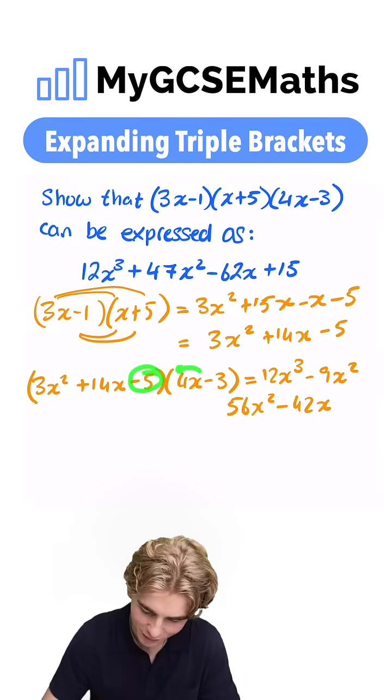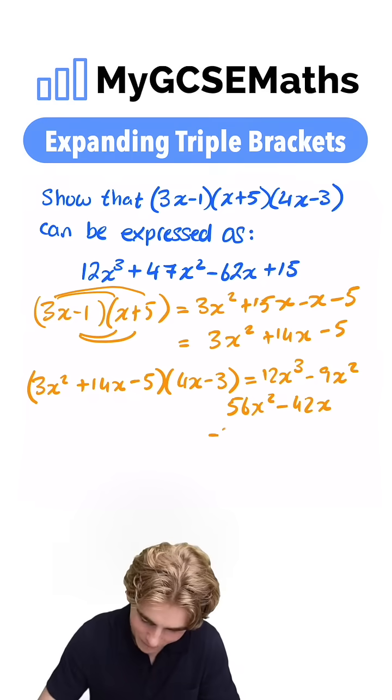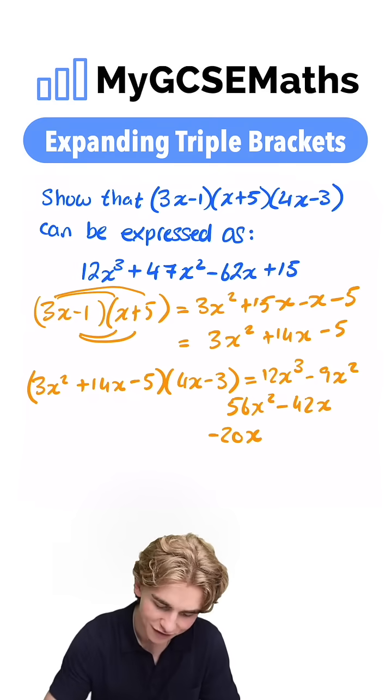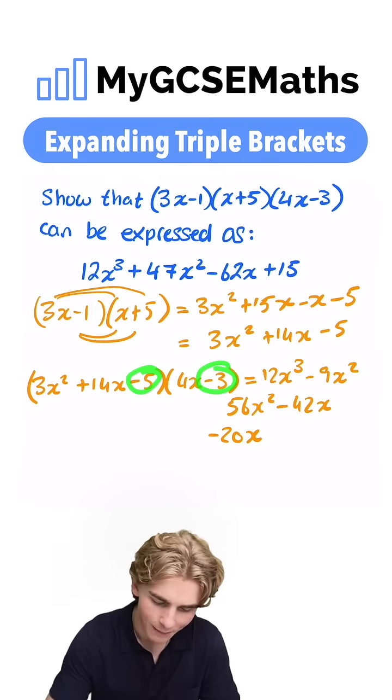Next up, we have minus 5 times by 4x. That's gonna give us our minus 20x. And finally, minus 5 times by minus 3, that's going to be positive 15.